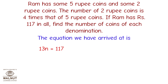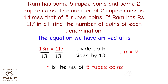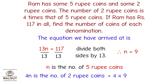The total value is given as rupees 117, so 13n equals 117. Let's divide both sides by 13; therefore n equals 9. n is the number of 5-rupee coins, and 4n is the number of 2-rupee coins, which equals 4 into 9, which is 36.